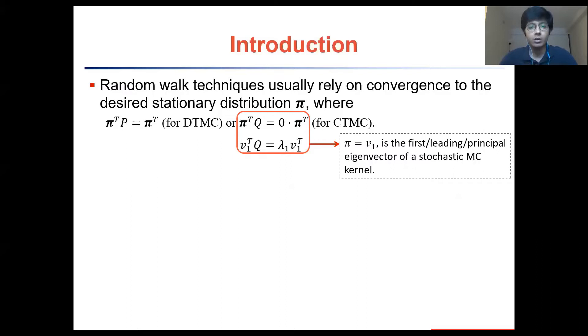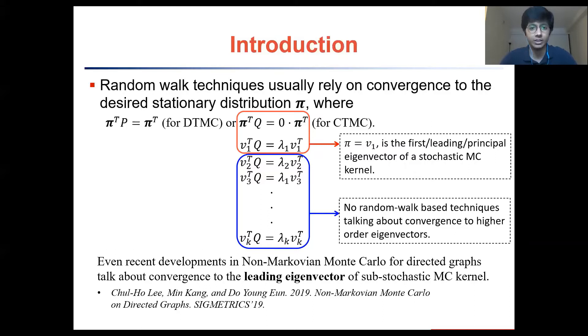However, what about the other eigenvectors of the Markov chain kernel? To the best of our knowledge, no random walk based techniques as of now talk about convergence to these higher order eigenvectors. Even the recently developed non-Markovian Monte Carlo technique, for example, which is used for sampling from directed graphs, is about convergence to the leading eigenvector of a sub-stochastic Markov chain kernel.